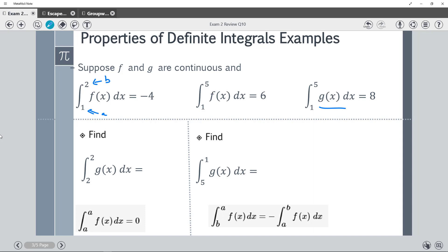So the first one, they ask you to find g(x) from 2 to 2. Well, we just saw that that was one of our properties. That would be an area of zero.